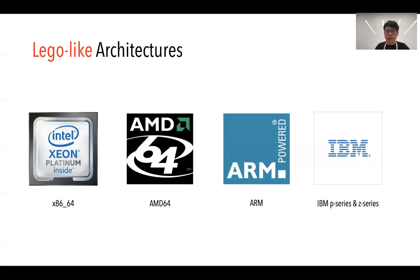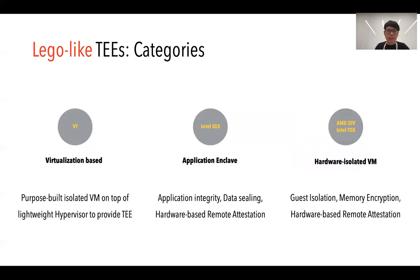Besides hypervisors, Kata containers also supports different architectures besides x86 — it also supports AMD, ARM, and IBM platforms. In addition to hypervisors and architectures, we still have TEEs as Lego pieces. They can be categorized into three types: virtualization-based, application enclave, and hardware-isolated VMs. Virtualization-based TEEs are purpose-built isolated VMs running on top of lightweight hypervisors to provide TEE functionalities. Application enclaves are backed by hardware-based integrity and confidentiality protection and support sealing and attestation services. Hardware-isolated VMs support attestation as well, with guest-level isolation via memory encryption.